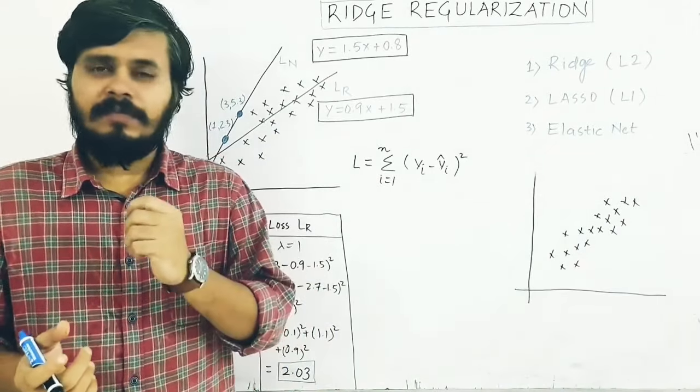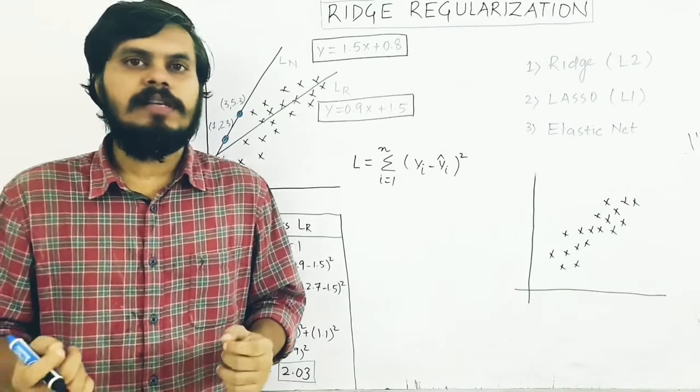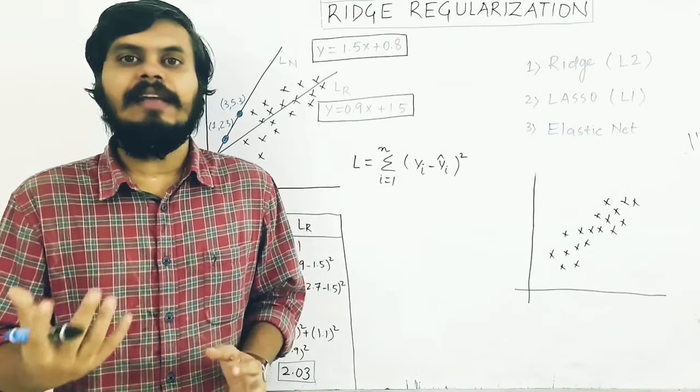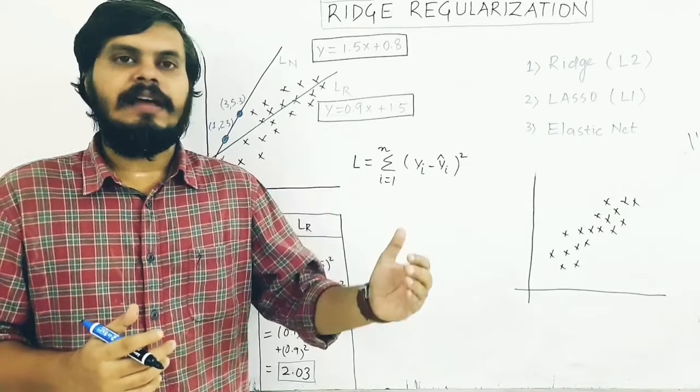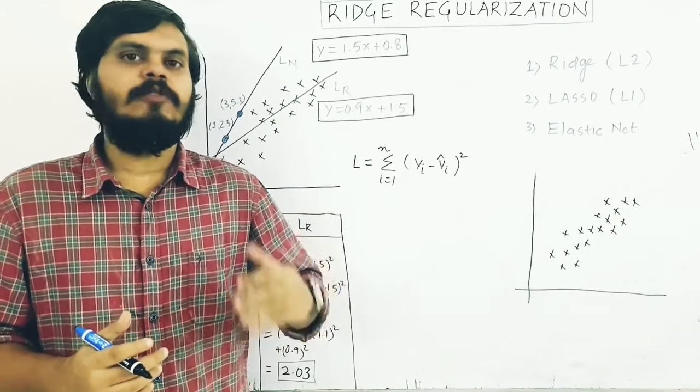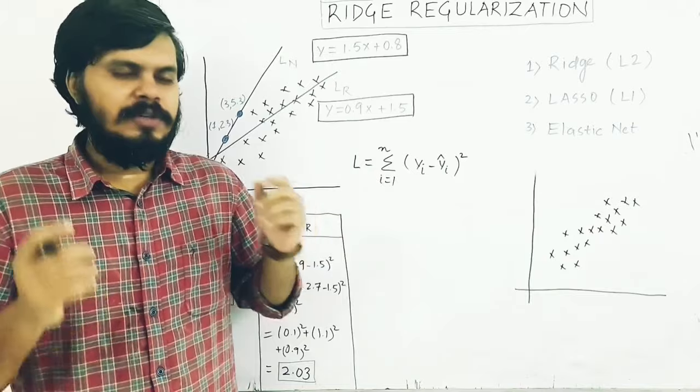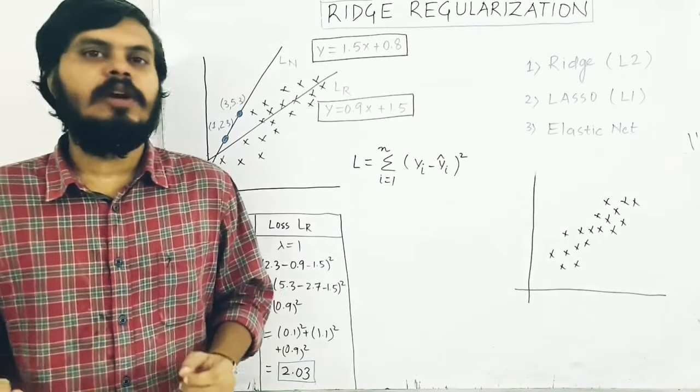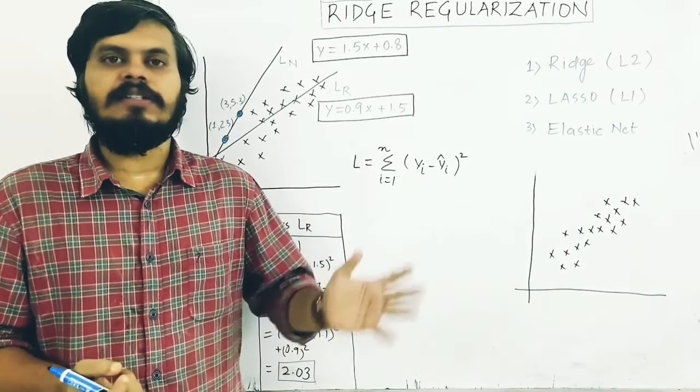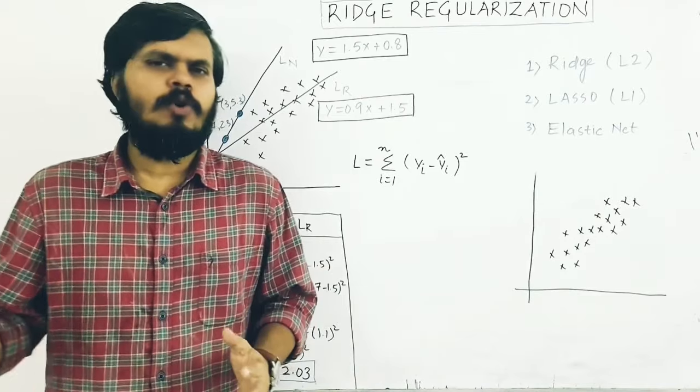We also read about bias-variance tradeoff. If you have to reduce overfitting in your machine learning model, there are three techniques available: bagging, boosting, and regularization. It's a very important concept, especially when you're dealing with regression, linear regression, as well as logistic regression.